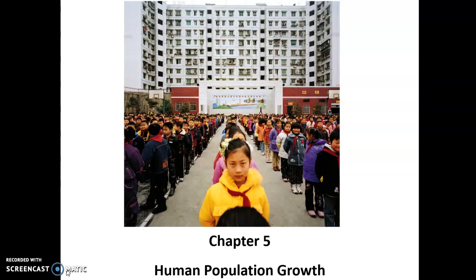It took about three years for the government to come to the realization that this course of action was not working out very well. As a result, about 30 million people died of starvation during that period of time. In addition to starvation, there was also undernutrition and malnutrition — undernutrition meaning not having enough calories, malnutrition meaning not having enough of certain nutrients such as vitamins. Both of these situations can damage the growth and development of children, particularly children's brains and nervous system, and cause blindness, among other things.